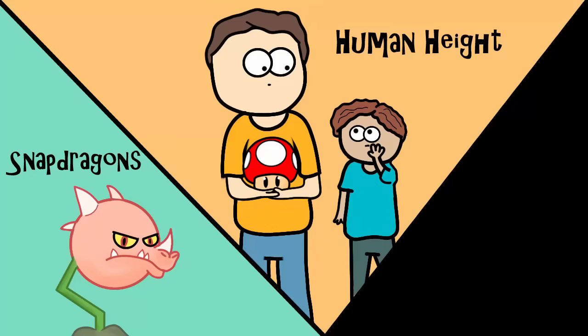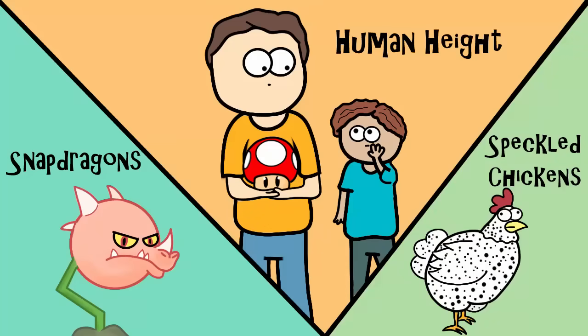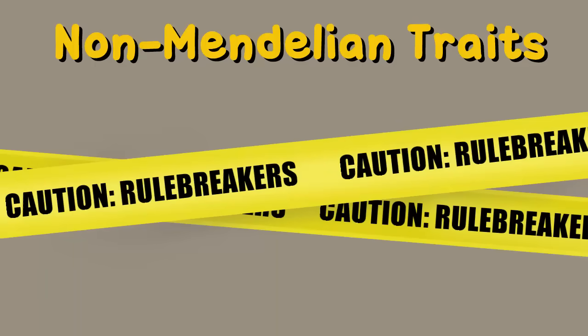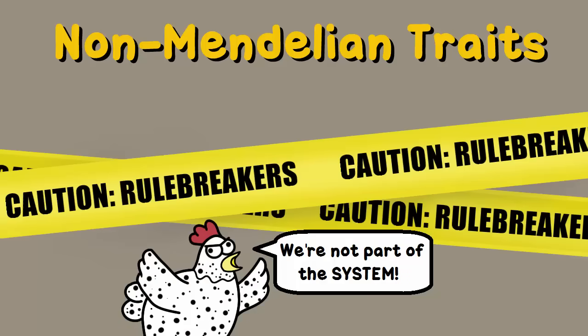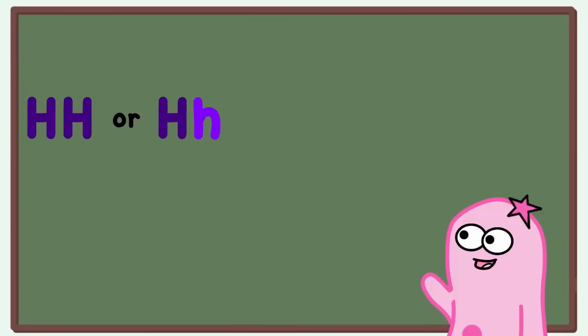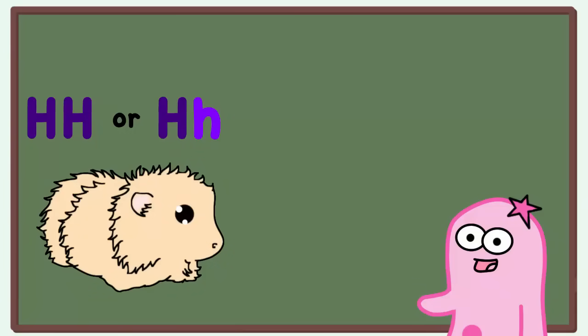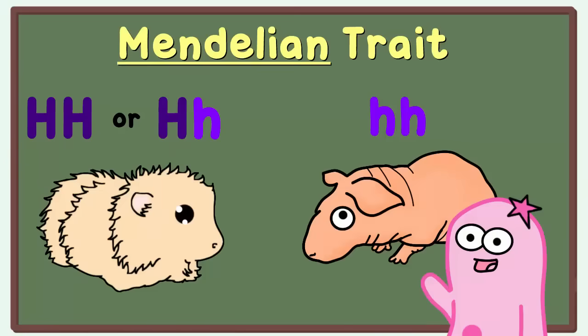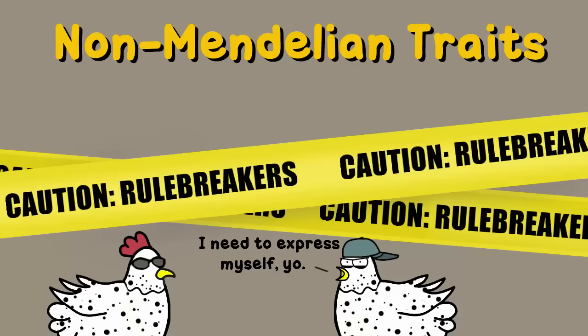What do snapdragons, human height, and speckled chickens have in common? They are easily identified as non-Mendelian traits. By non-Mendelian, we mean that genetically, they are rule breakers. They don't follow the regular Mendelian rule that having a dominant allele means the dominant trait will show. Remember in our guinea pig video, having a dominant allele, represented by a capital H, meant that the guinea pig would have hair? Only if there was no dominant present — a genotype of little h, little h — would there be a hairless guinea pig. That's a Mendelian trait. What we're going to cover now is when traits are non-Mendelian and don't follow these basic rules.